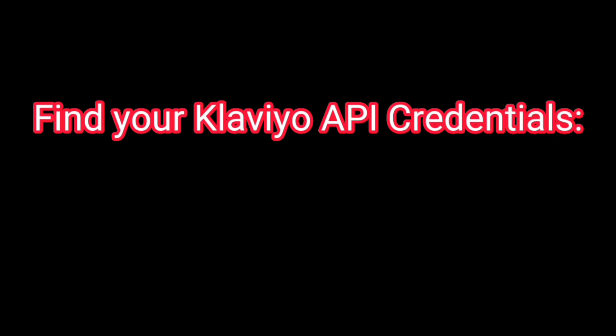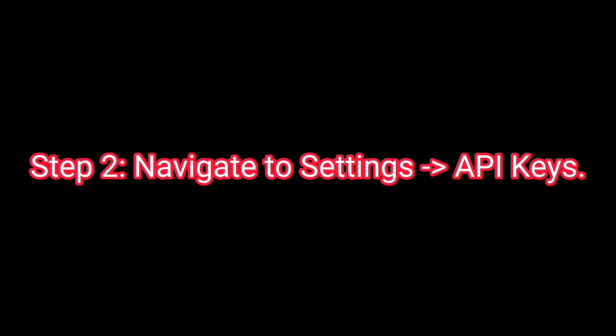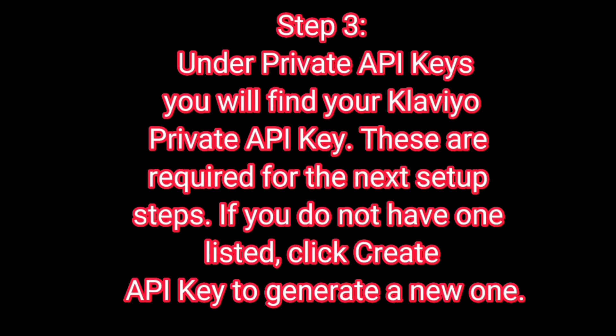Find your Klaviyo API credentials. Step 1: Log in to your Klaviyo account and navigate to Account in the header menu. Step 2: Navigate to Settings > API Keys. Step 3: Under Private API Keys, you will find your Klaviyo private API key. These are required for the next setup steps. If you do not have one listed, click Create API Key to generate a new one.